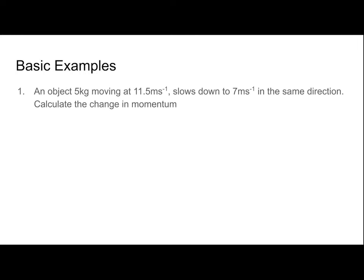Basic example: an object of 5 kilograms is moving at 11.5 m/s and slows down to 7 m/s in the same direction. Calculate the change of momentum. Using Δp = m(vf − vi), our final velocity is 7 m/s and our initial velocity is 11.5 m/s. Substituting in — mass is 5 — our change of momentum is −22.5 kg·m/s, meaning the object has lost 22.5 kg·m/s of momentum due to an external force.